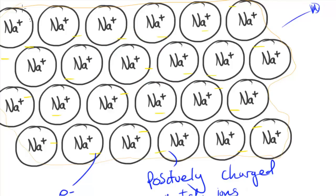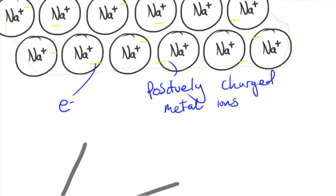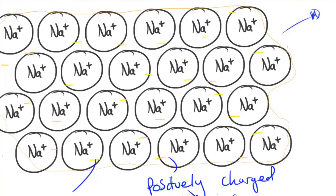The fact that we have delocalized electrons means those electrons are free to move around, and because of this most metals can conduct electricity. If you put an electrical connection at two points, the electrons are able to drift between them and allow charge to flow through the material. This is one of the properties of metals that makes them very suitable for electronics and circuits.